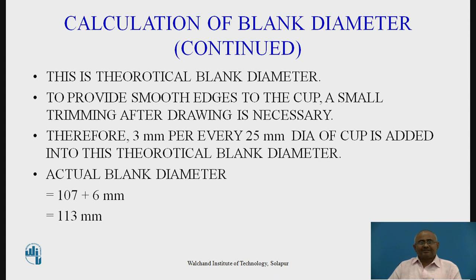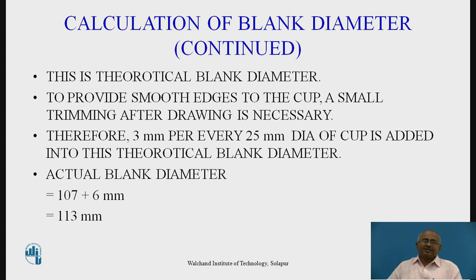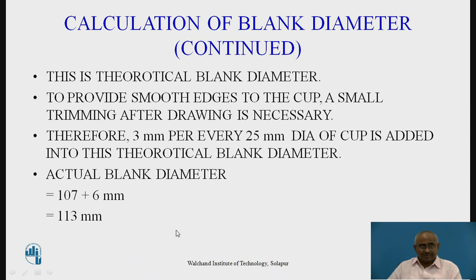The blank drawn has edges that need to be smoothened, and for that we have to carry out a trimming operation — that is, a cutting operation of the edges after drawing. It is absolutely necessary; otherwise our edges will be very sharp. Therefore, 3 mm per every 25 mm diameter of cup has to be added to the theoretical blank diameter. Our cup diameter is 50 mm, so we add 6 mm to 107 mm. Therefore, our actual blank diameter is 113 mm, referred to as capital D.